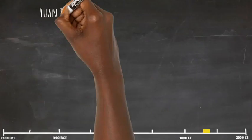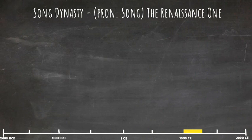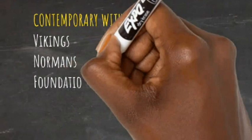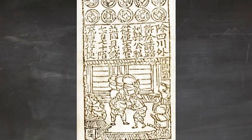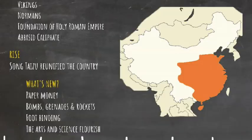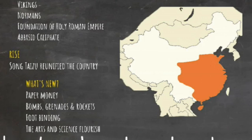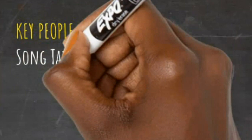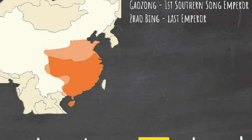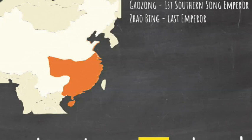With China once more divided, the Song dynasty came to power in 960. They ruled at the time of the Vikings, Normans, the foundation of the Holy Roman Empire, and the Abbasid Caliphate. Song Taizu reunified much of the country, though their territory was less than that of their predecessors due to ongoing conflict. Paper money was introduced during the Song dynasty, and gunpowder was weaponized. Culturally, this was the dynasty that introduced foot binding, and the arts and sciences flourished. When the north was overrun, Gaozong became the first emperor of the southern Song, while Zhao Bing was the last emperor — a seven-year-old boy who reigned for less than a year and jumped to his death from a cliff after defeat to the Mongols at the Battle of Yamen.